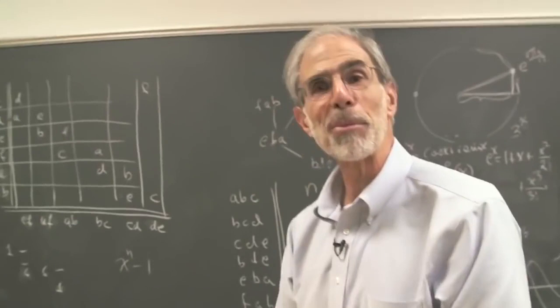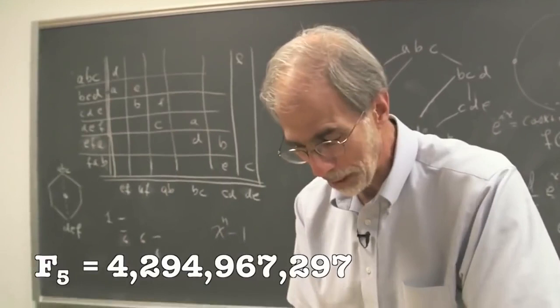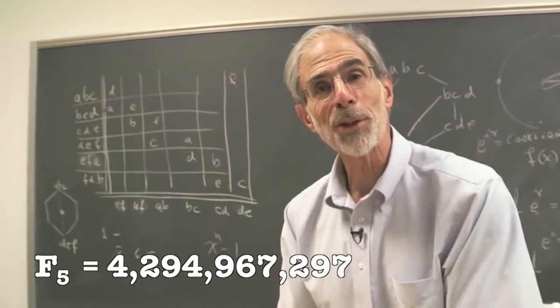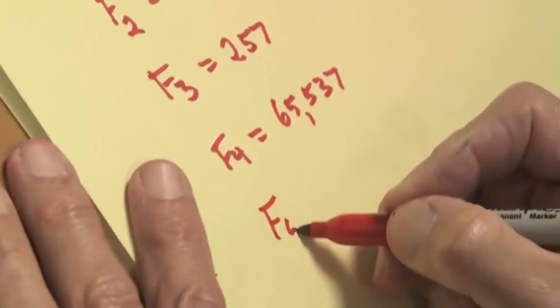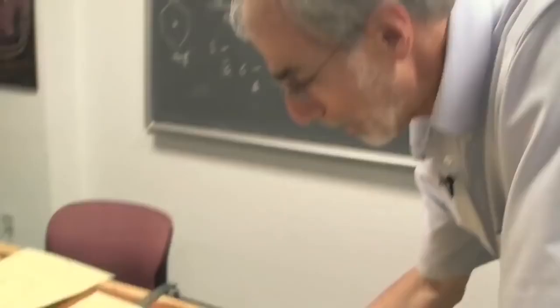And Fermat said, look, I've found a formula for primes. Now, at the time of Fermat, nobody had the technique to figure out whether f5 was prime or not. And so Fermat just guessed that the series would continue. And it took Euler first to show that f5 is not prime. And in fact, if you look at f5 and you go on computing, as long as we can compute with computers, we've gotten to f32, none of these are prime. So Fermat was just misled. That's the worst prime-generating formula ever. That's right. It's terrible. It generates exactly five prime numbers.